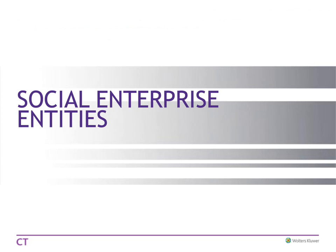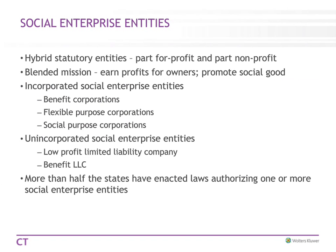Now we're on to the Public Benefit Corporation. They are hybrid entities — for-profit and non-profit — with a blended mission. They promote the social good yet want to earn profits for the owners. Before these arose, there was Ben and Jerry's, which tried to do that. When they were sold to Unilever, Unilever had no obligation to continue doing what Ben and Jerry's had. These are considered incorporated social enterprises. The most common now is the Benefit Corporation. There's also a Flexible Purpose Corporation and Social Purposes, and something called the Triple LC which is kind of like a non-profit LLC, but that has not panned out.